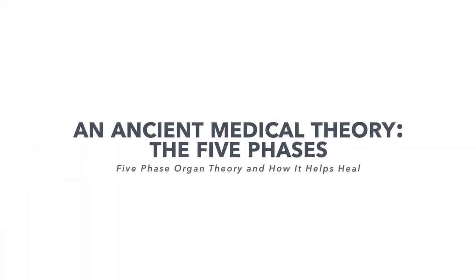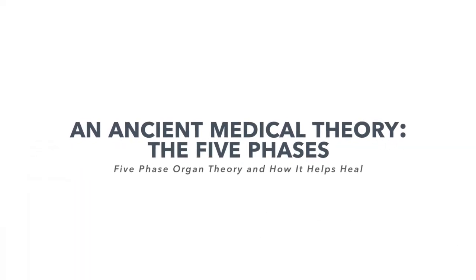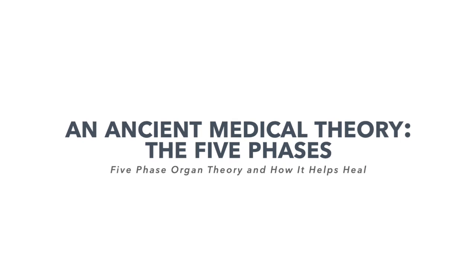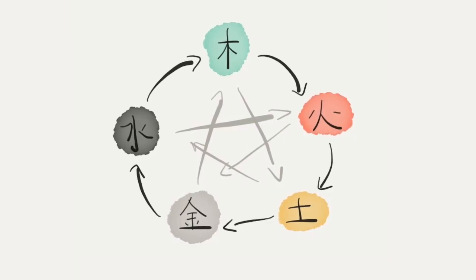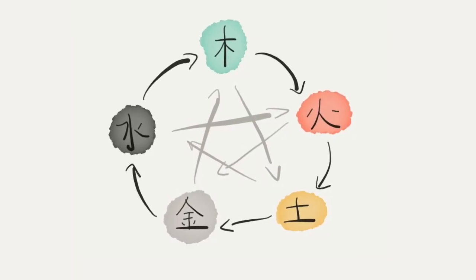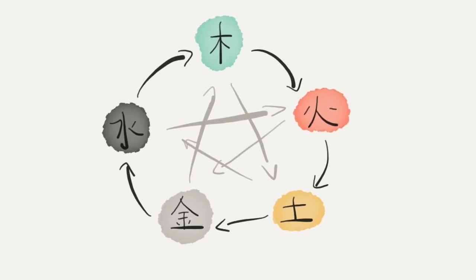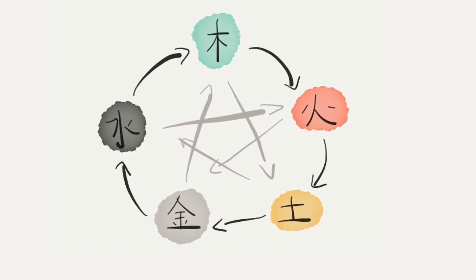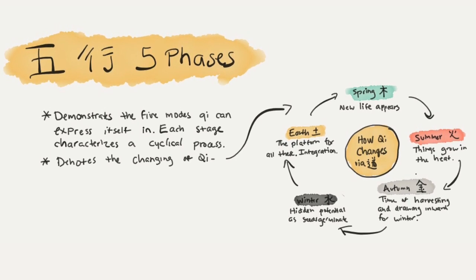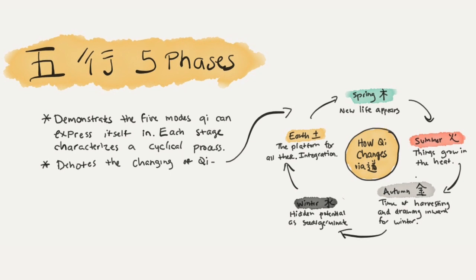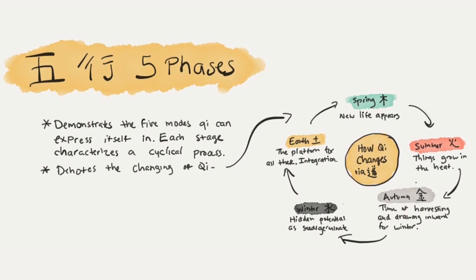This idea of the five phases — sometimes called the five elements — is an ancient concept that was often applied to many things and not just medicine. It originated by observing forces, relationships, and processes in the natural world. It's often drawn in a circular shape of fire, earth, metal, water, and wood. Most importantly, these are not just static concepts, which is why people prefer the term five phases over five elements — because they're always dynamic and changing, especially in response to one another.